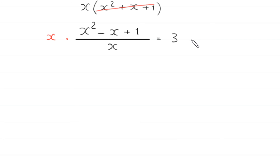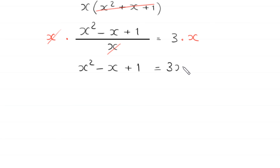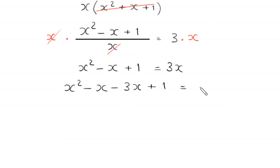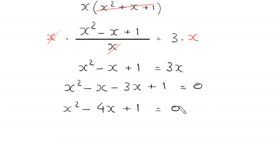After cancellation, we are left with x squared minus x plus 1 divided by x equals 3. We multiply both sides by x, so x squared minus x plus 1 equals 3x. Moving 3x to the left hand side, the equation becomes x squared minus x minus 3x plus 1 equals 0, which simplifies to x squared minus 4x plus 1 equals 0.